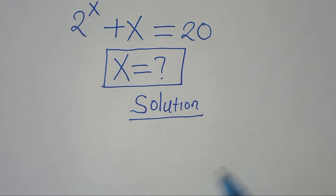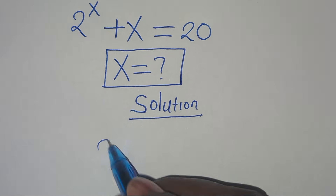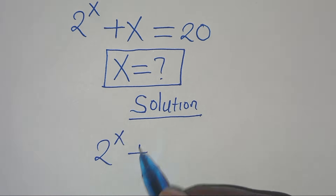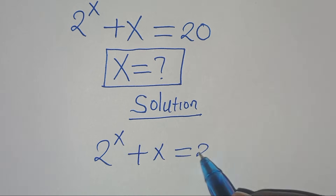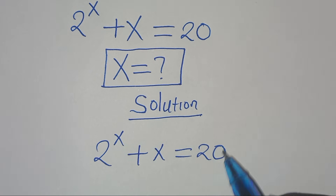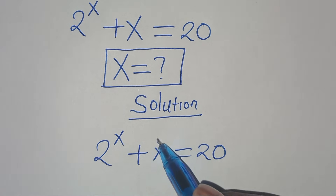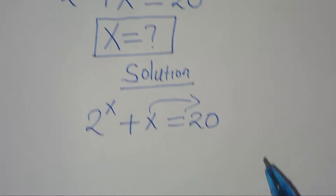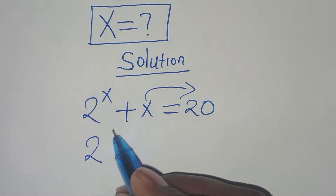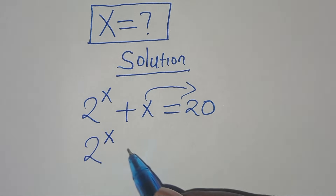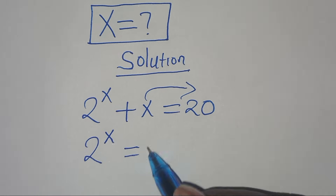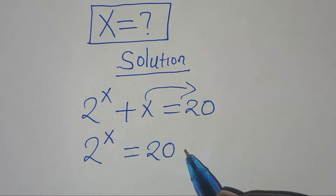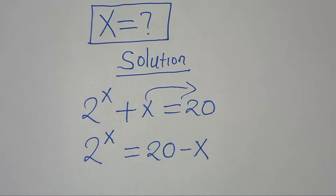The first step: we have 2 to the power of x plus x, and this is equal to 20. We take x to the right hand side so that we have 2 to the power of x equals 20 minus x.